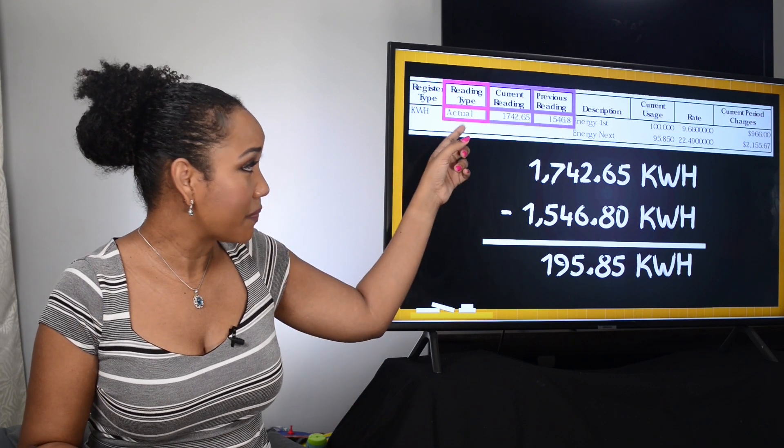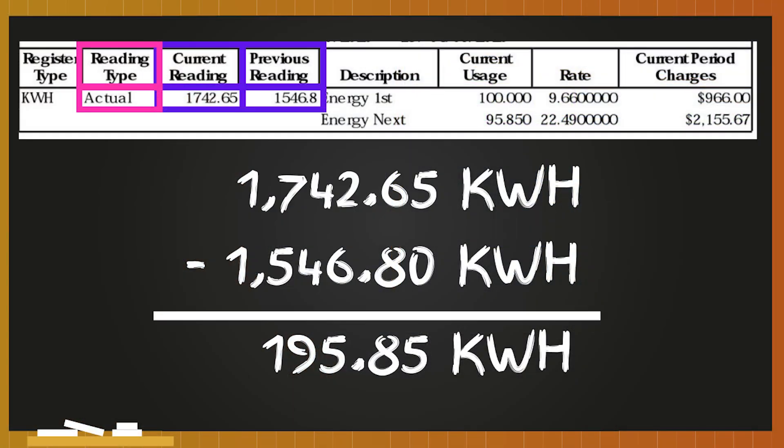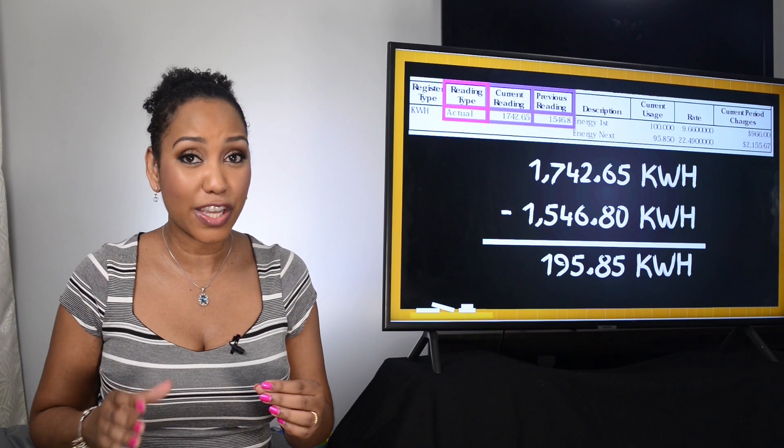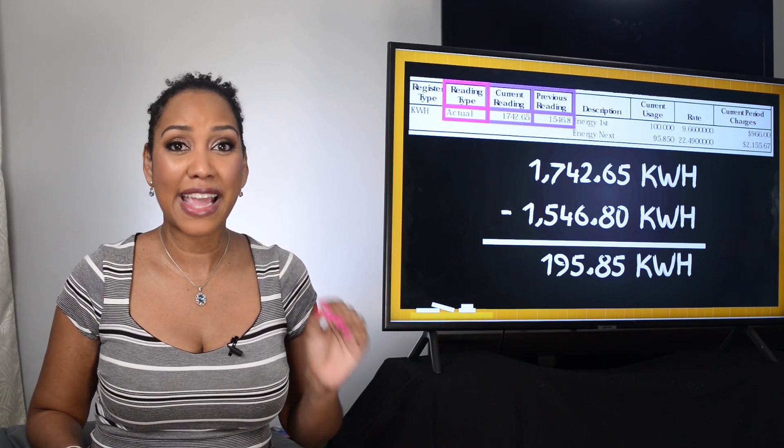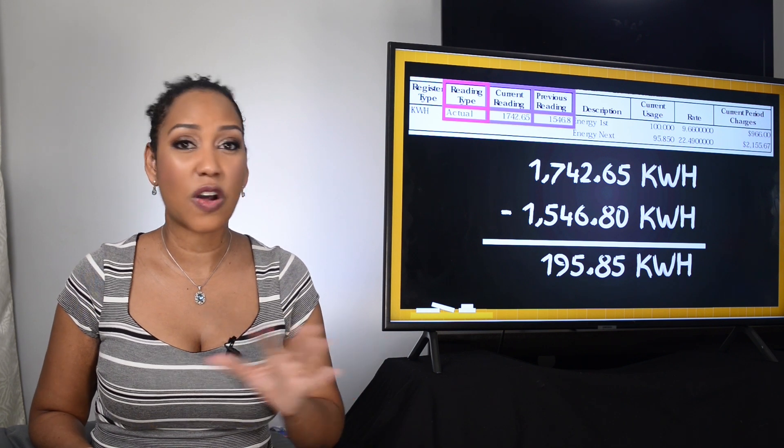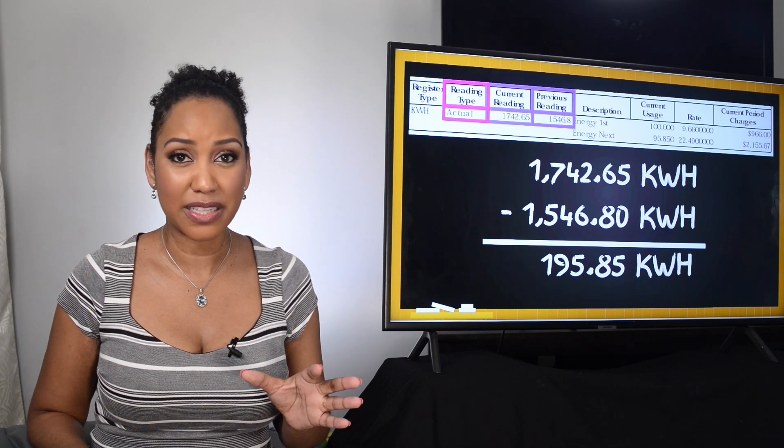Now if it says actual in the reading type then that means that a meter reader was able to read your meter and get the accurate energy usage. This is the information that the meter reader takes from your meter to calculate all the other line items on your bill.